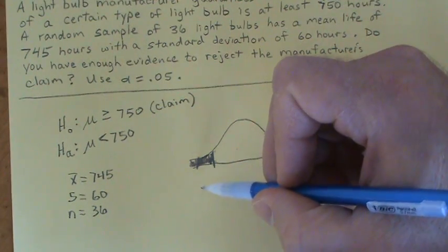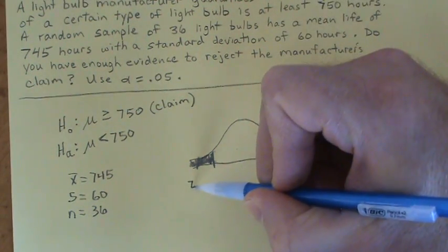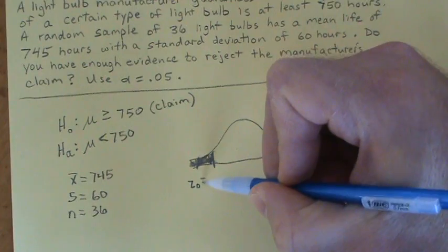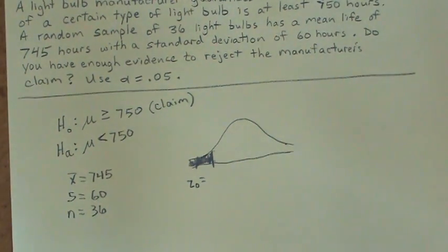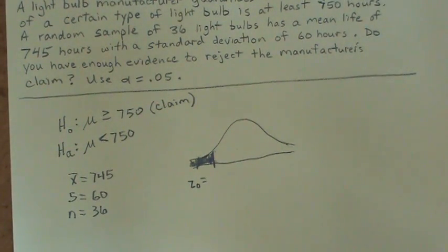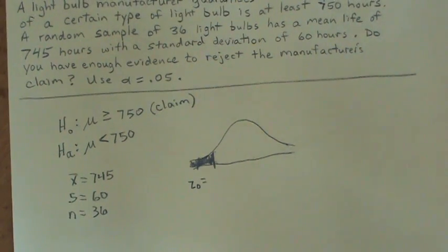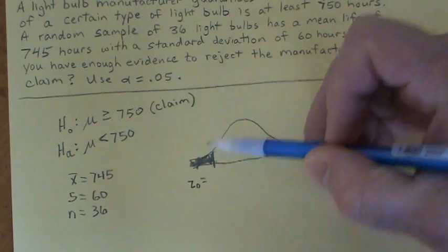And since this is a z test we're going to be doing, it's a z critical value, usually labeled z₀ with a sub zero. Now if you need help finding critical values, I can help you with that, but usually you can look them up in a table. And it turns out for a left tail test when your α is 0.05, the critical value should be negative 1.645.